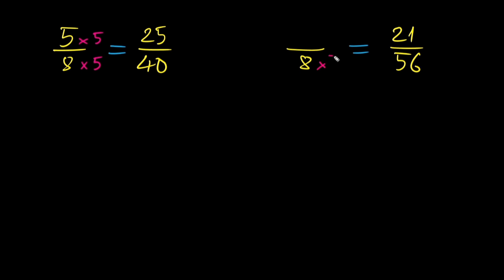Whatever we do to the denominator, we must do to the numerator. To find the missing numerator, divide 21 by 7, which is 3. So the equivalent fraction is 3 over 8 equal to 21 over 56.